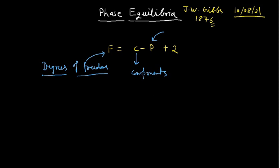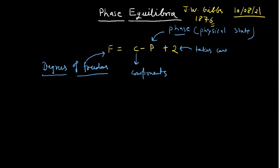Then there is P, and P is the phase. Phase is nothing but the physical state. After that, there is the numeric value 2. Why is this 2 there? Generally, this 2 accounts for the effect of temperature and pressure — it takes care of the effect of temperature and pressure.